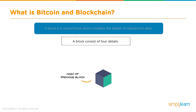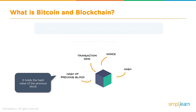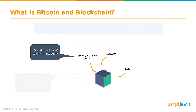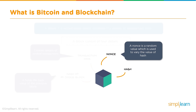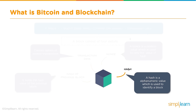A block consists of four primary details: the hash of the previous block, an aggregated list of transactions, the value of nonce, and the hash for the block itself — which acts like a digital signature. The hash of the previous block links it to its predecessor. Nonce is a random value generated to derive a hash value lower than the target. The hash is an alphanumeric value used to uniquely identify the block.